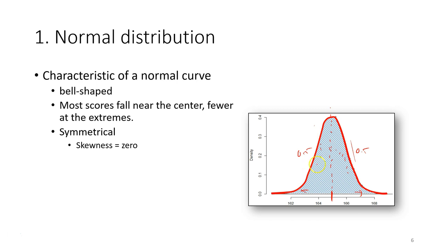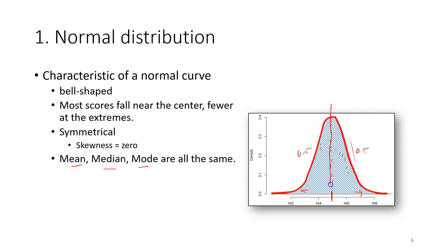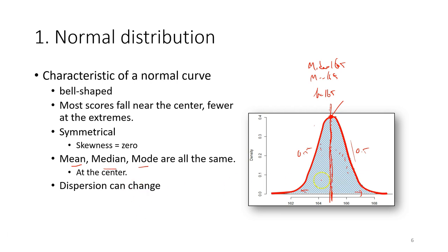There is no skewness; the peak is centered at the mean, and the skewness is 0. Also, the mean, median, and mode are the same — all located at the center of the curve. So if the mean is 165, then the median will be 165 as well, and the mode also. However, the dispersion can change. These are the important characteristics of a normal curve.